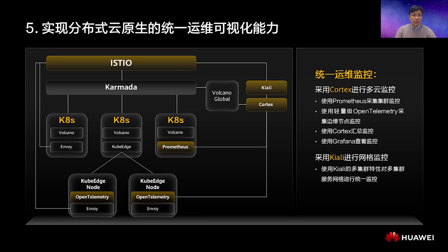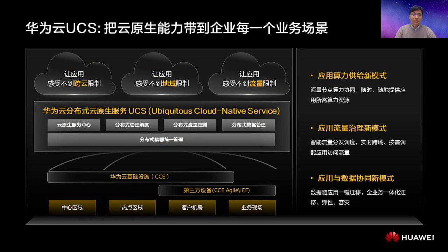So far, you have built a base for your own open-source distributed cloud-native services. Integrating all these open-source capabilities, Huawei launched UCS to inject cloud-native into your applications running everywhere. UCS provides intelligent application scheduling and scaling, fine-grained traffic governance, and collaborative management of applications and data, so that applications will not be throttled by cross-cloud, cross-region, and traffic management concerns. Huawei Cloud will stay open and keep contributing to open-source communities to build a distributed cloud-native world. We welcome you all to join us. Thank you.